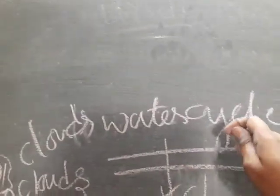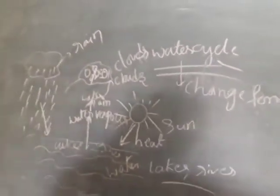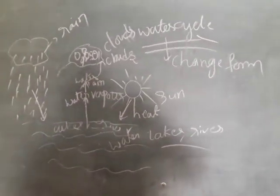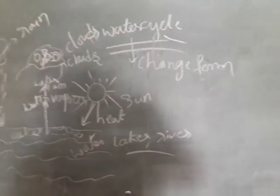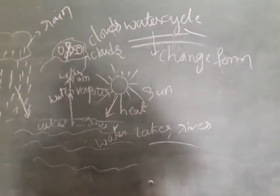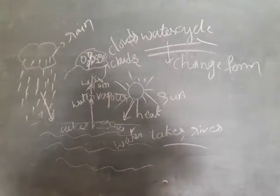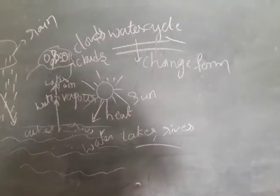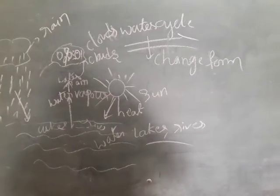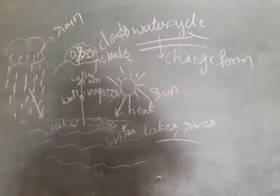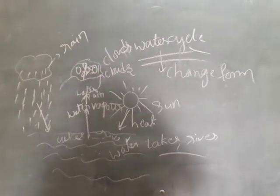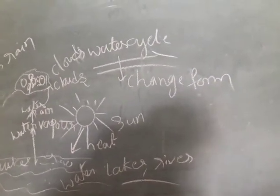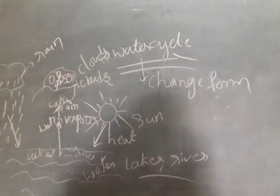This is the water cycle and how water changes its forms. When water is boiled, it changes to water vapor. When that water vapor is cooled, it changes back to water. When water is cooled in the refrigerator, it changes to ice. And when that ice is left out, it changes back to water. These are the changes of water forms and the water cycle. Tomorrow we will do tick the correct option, answer the questions, true or false, and match the following. Okay, children? Thank you.